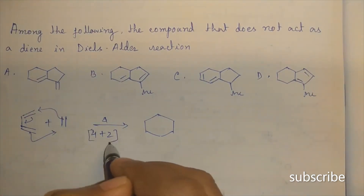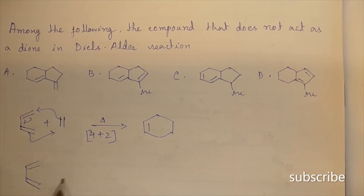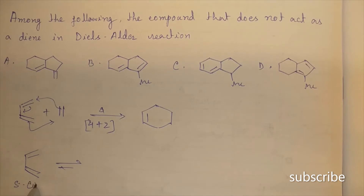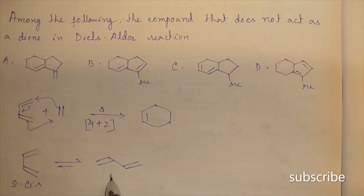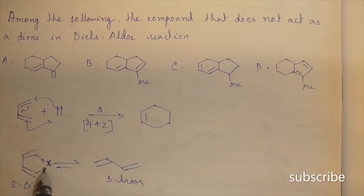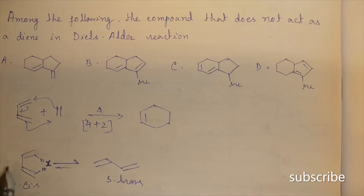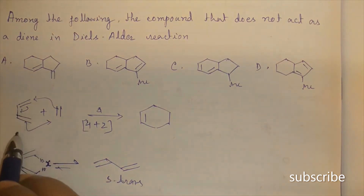This is a 4+2 cycloaddition reaction. The diene can have two configurations: s-cis and s-trans. In the s-cis configuration the two hydrogens are very close, causing steric interaction, so the s-trans configuration is much more preferable and the diene generally prefers to remain in s-trans configuration.